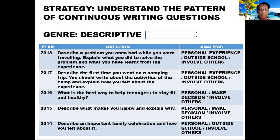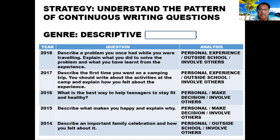For 2015: describe what makes you happy and explain why. One keyword forming the pattern for descriptive essay questions is personal — it is not about other people's happiness, it is about your happiness. You also have to make a decision, because there are different things and people that can make you happy, but you need to choose some, as the essay can only be written in about one hour.